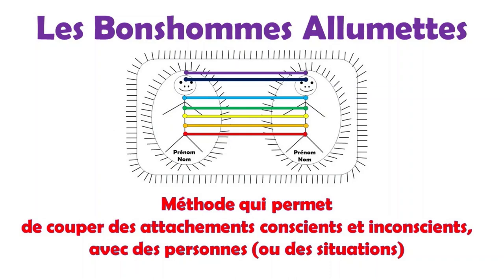Alors, voici quelques exemples de situations que vous pouvez mettre dans le rectangle de droite. Par exemple, un contrat de divorce, un litige avec votre propriétaire, un litige avec votre voisin, vos difficultés avec votre emploi actuel, etc. Donc, en règle générale, vous devez simplement nommer la situation qui vous préoccupe ou que vous voulez harmoniser à l'intérieur du rectangle.